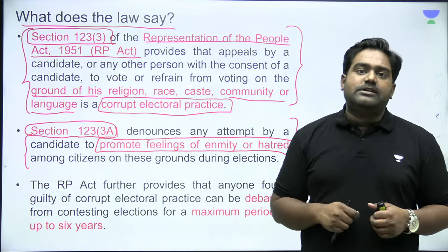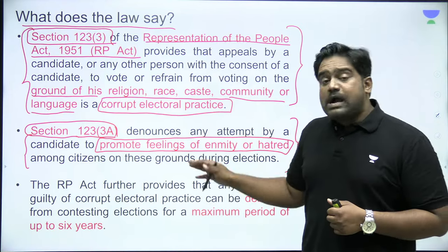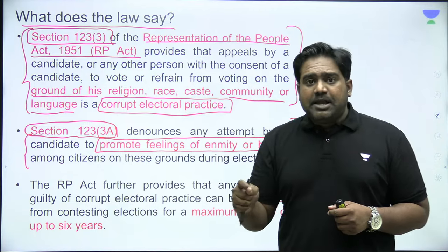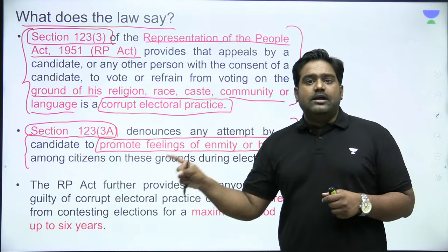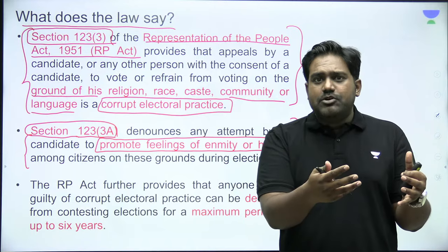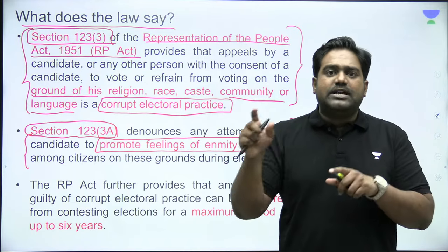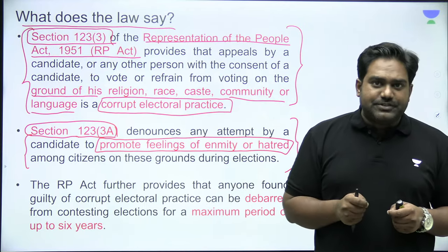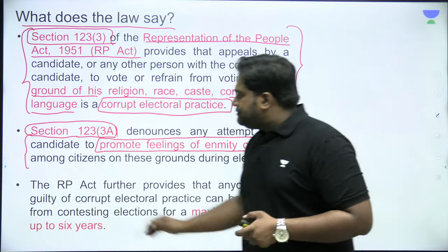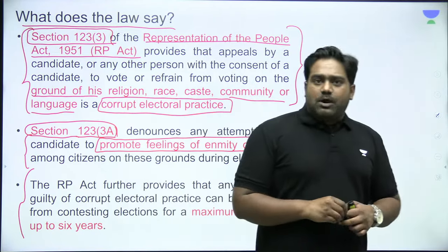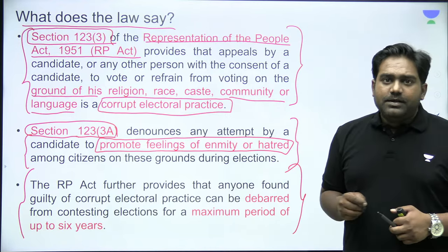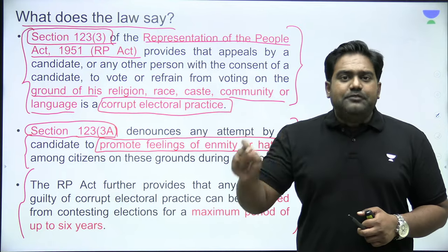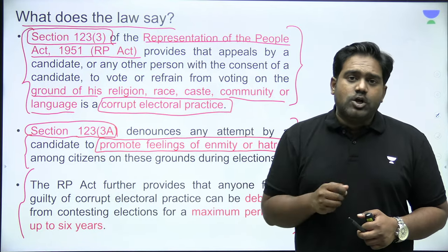So on one hand, you can't seek votes in the name of religion, race, caste, community, or language; and at the same time, you can't promote enmity or hatred between communities just to get votes and win elections. Both are recognized as corrupt electoral practices. For violation of these provisions, there is a strict punishment: candidates held guilty can be debarred from elections for a maximum period of six years.